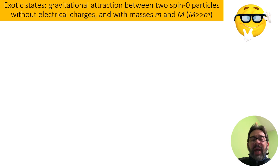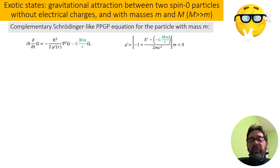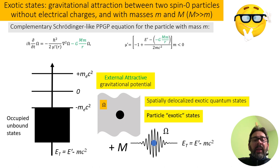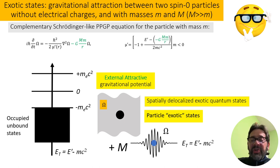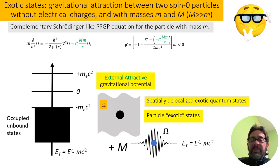Exotic state: gravitational attraction between two spin-zero particles without electrical charge and with masses m and capital M, capital M much larger than m. To find the exotic state, we should solve the complementary Poveda-Poriere-Gravide Peralta equation for the particle with mass m, shown here. The minus sign corresponds to the gravitational attraction between the two masses. The effective relativistic mass is negative, and for this reason the exotic state of mass m moving around the large mass capital M has a continuous spectrum of energies and is spatially delocalized. The external attractive gravitational potential produces exotic states that are spatially delocalized.